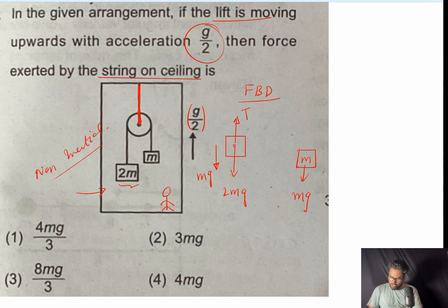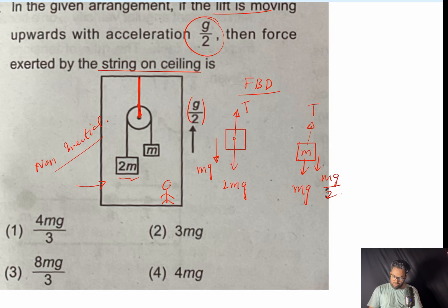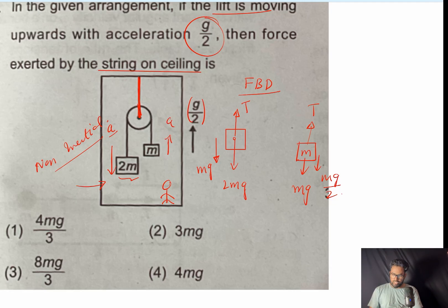Similarly, for the m block: downward force is mg, upward force is tension T, and pseudo force is mg/2 downward. We'll assume that with respect to the lift, block 2m is going downward with acceleration a, and block m is going upward with acceleration a.